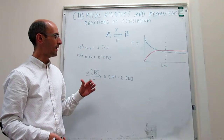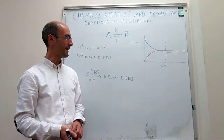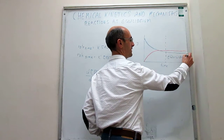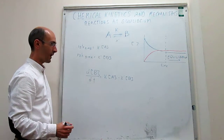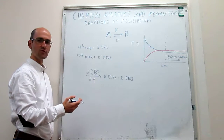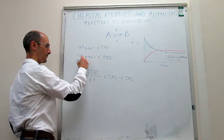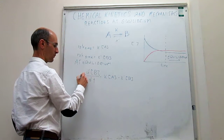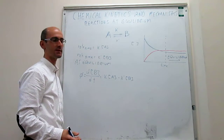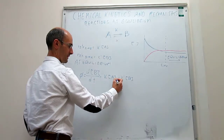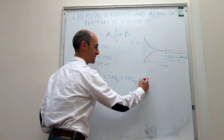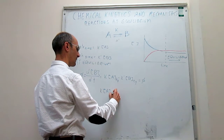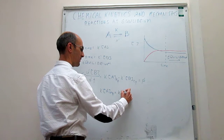This applies to any point in the diagram, but after you have reached equilibrium — from the dashed line on — the concentrations no longer change. What actually happens is that the concentration of B doesn't change with time. At equilibrium, d[B]/dt is equal to zero — there's no change in the concentration of B with time. This means that K times the concentration of A at equilibrium is equal to K' times the concentration of B at equilibrium.